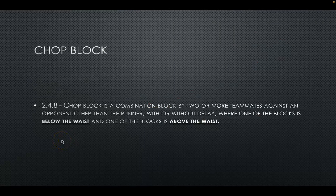The first rule we're going to look at is the chop block. In Rule 2-48, a chop block is a combination block by two or more teammates against an opponent other than the runner, with or without delay, where one of the blocks is below the waist and one of the blocks is above the waist. We will now see videos discussing scenarios where a chop block is a foul and those that are not.